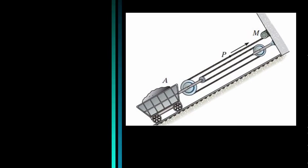It is important to establish the relationships between the various motions in order to determine the power requirements for the motor and the tension in the cable. For instance, if the speed of the cable P is known because we know the motor characteristics, how can we determine the speed of the mine car? Will the slope of the track have any impact on the answer?